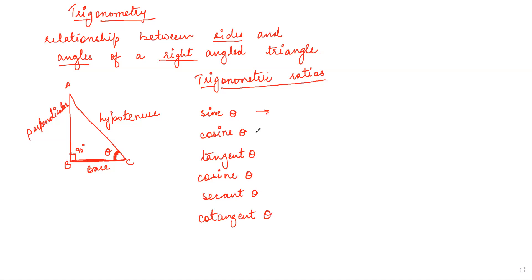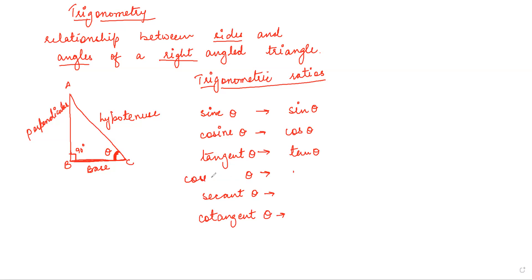Now in short, there are some short names for all of them so that you don't have to remember these tough terms. This is simply called sine theta, this is called cos theta, this is called tan theta. Then we have cosecant — so this is cosec theta — and this one is sec theta, and this one is called cot theta in short. This is the abbreviated version.